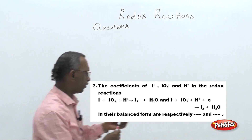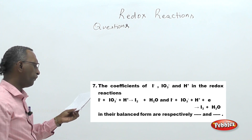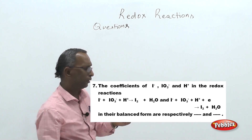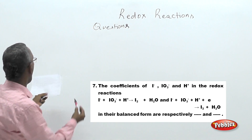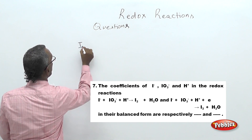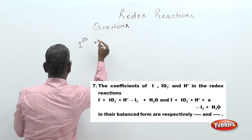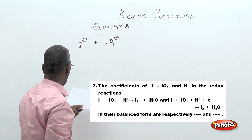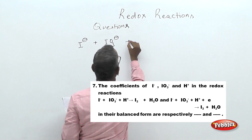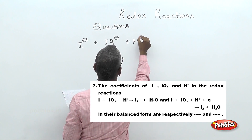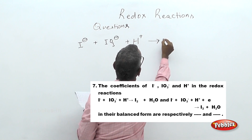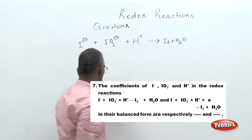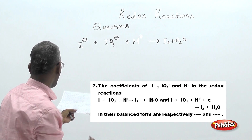This question reads: find the coefficients of iodide, iodate, and proton in the redox equation. The equation given is: I⁻ + IO₃⁻ + H⁺ (proton in acid medium), giving I₂ + H₂O.